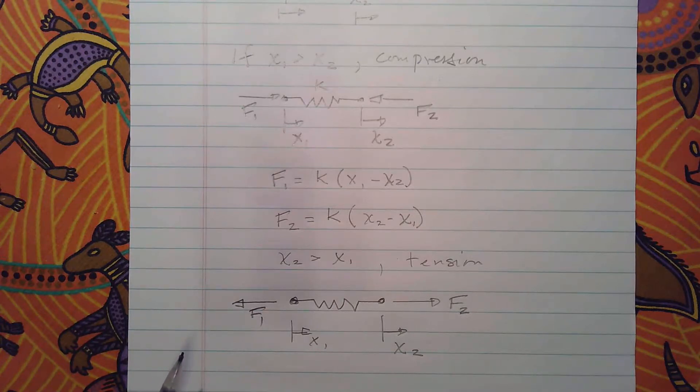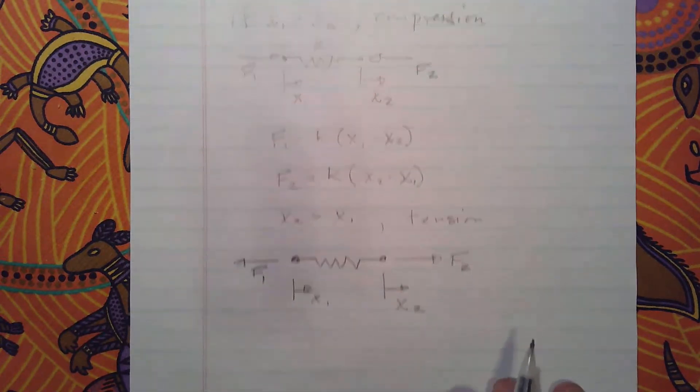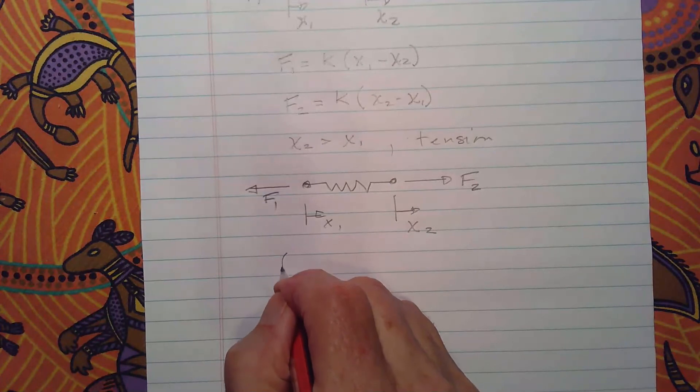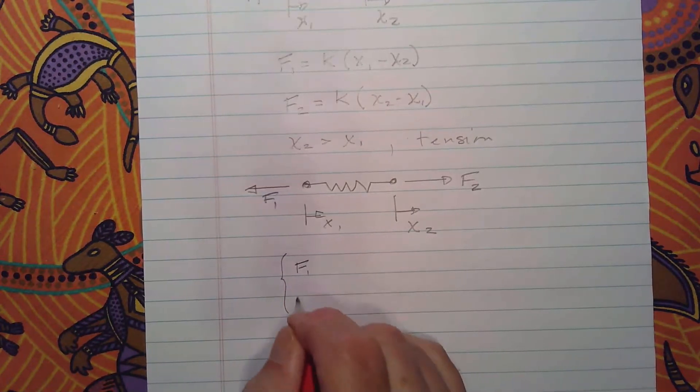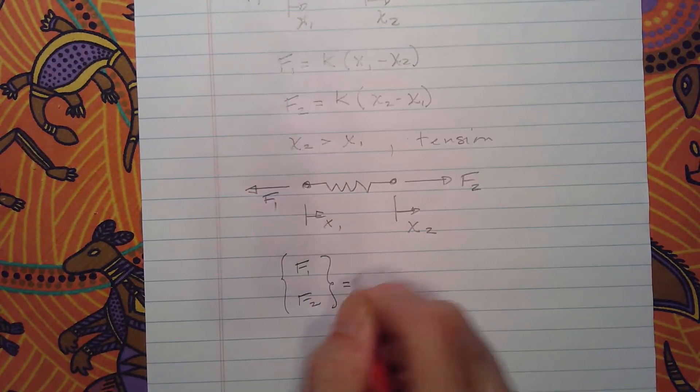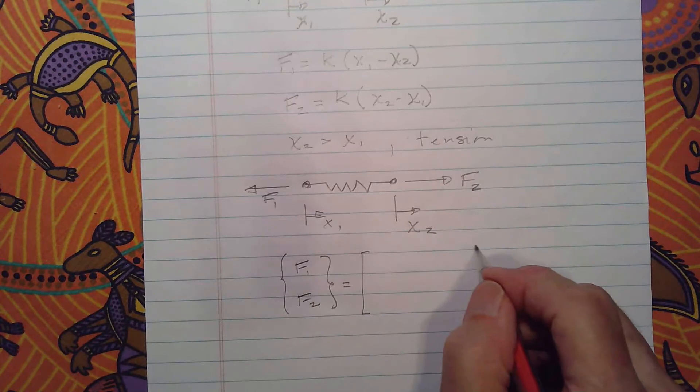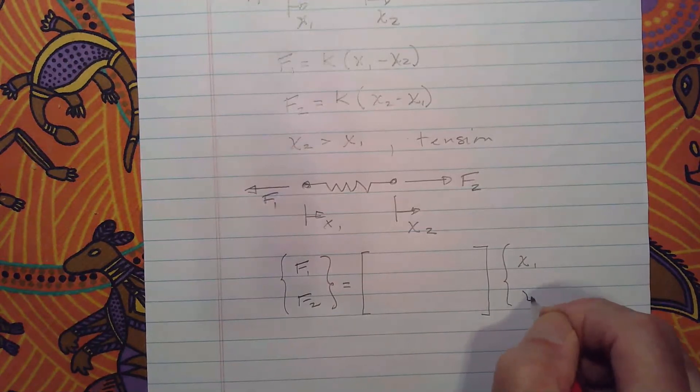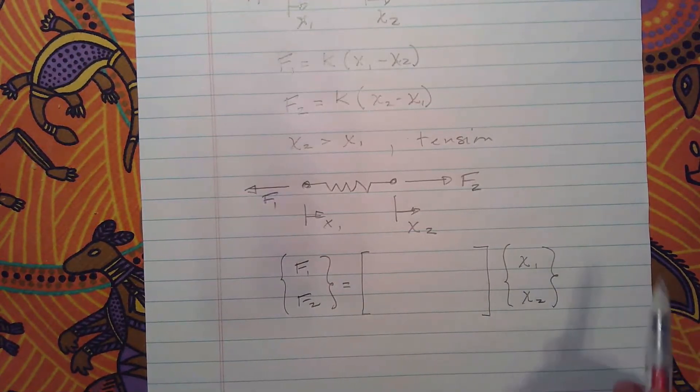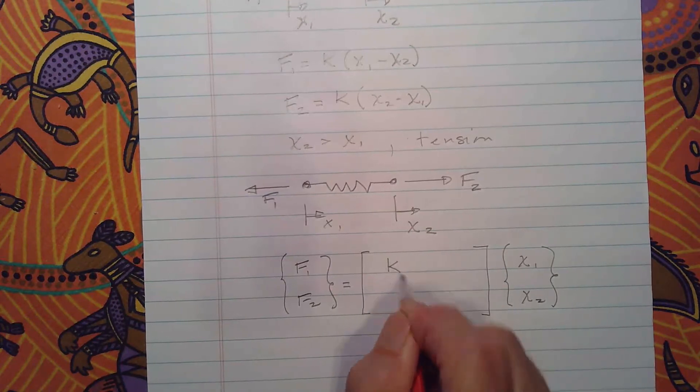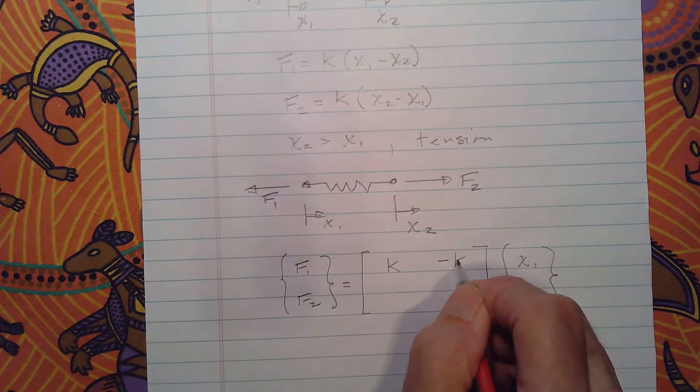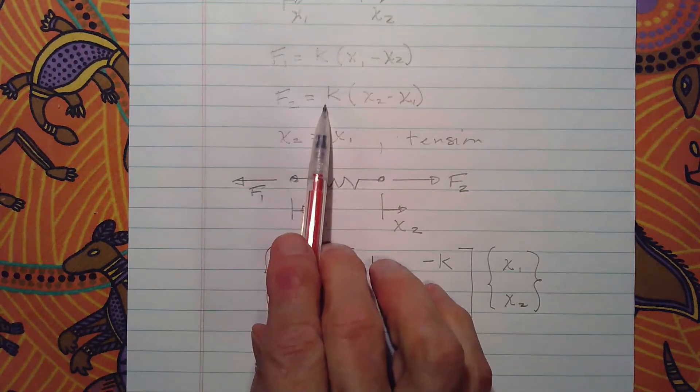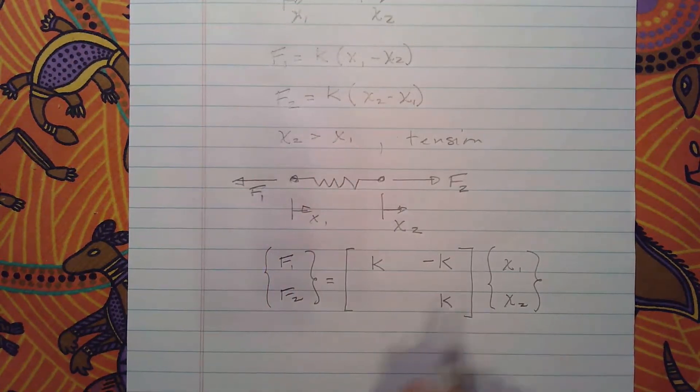So what we can do is we can put these equations into matrix form. If we do that, we will wind up with f1 here and f2 here. And then we will have, if we look at each equation and put our vector of nodal displacements out here to the right, then in the first equation we're going to have a k right here because that multiplies x1 and we're going to have negative k here. And then in the second equation we have positive k times x2, so we'll have a positive k here, but x1 has a negative k so we'll have a negative k right here.